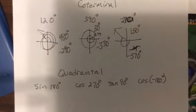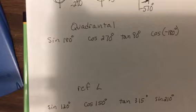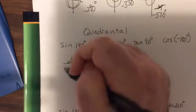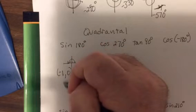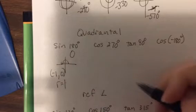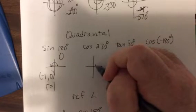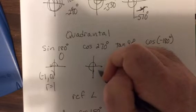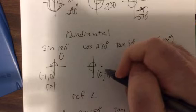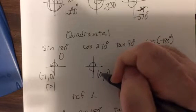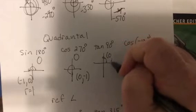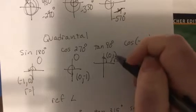Now quadrantal angles, those are when the terminal side is on the axis. So sine of 180, now I like to make a drawing, here's 180. So you pick a point, if you pick the point one unit away from the origin, then r has to be one. Now sine is y over r, so it'd be zero over one which is zero. Cosine of 270, we pick a point one unit, that would be zero negative one, and I can do one unit because we're on an axis, you're going straight down. And cosine is x over r, so r would be one because you're one unit, x is zero, so it'd be zero. Tangent of 90, 90 is right here, so zero one, r is one. Tangent's y over x, so one over zero, oh that's undefined.